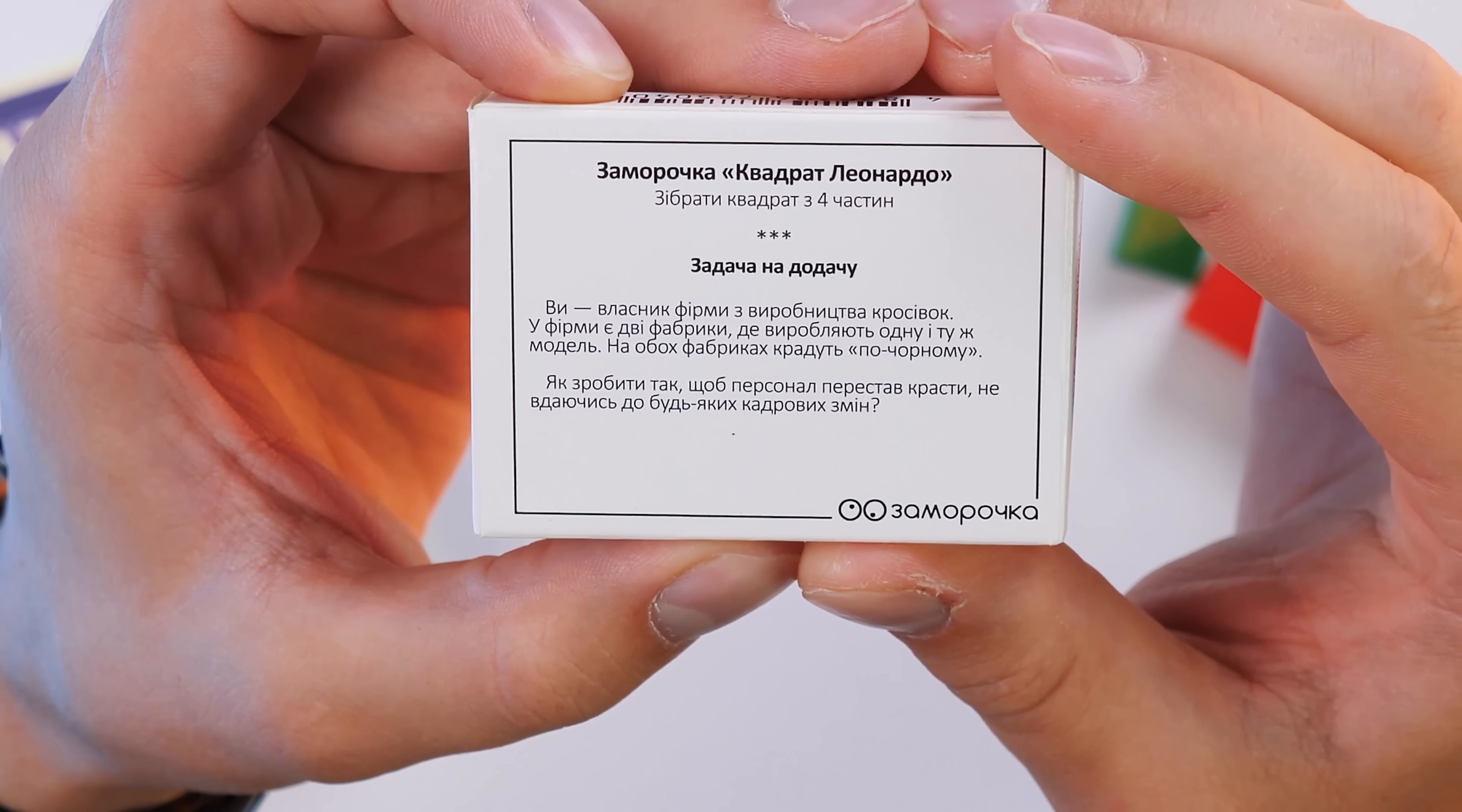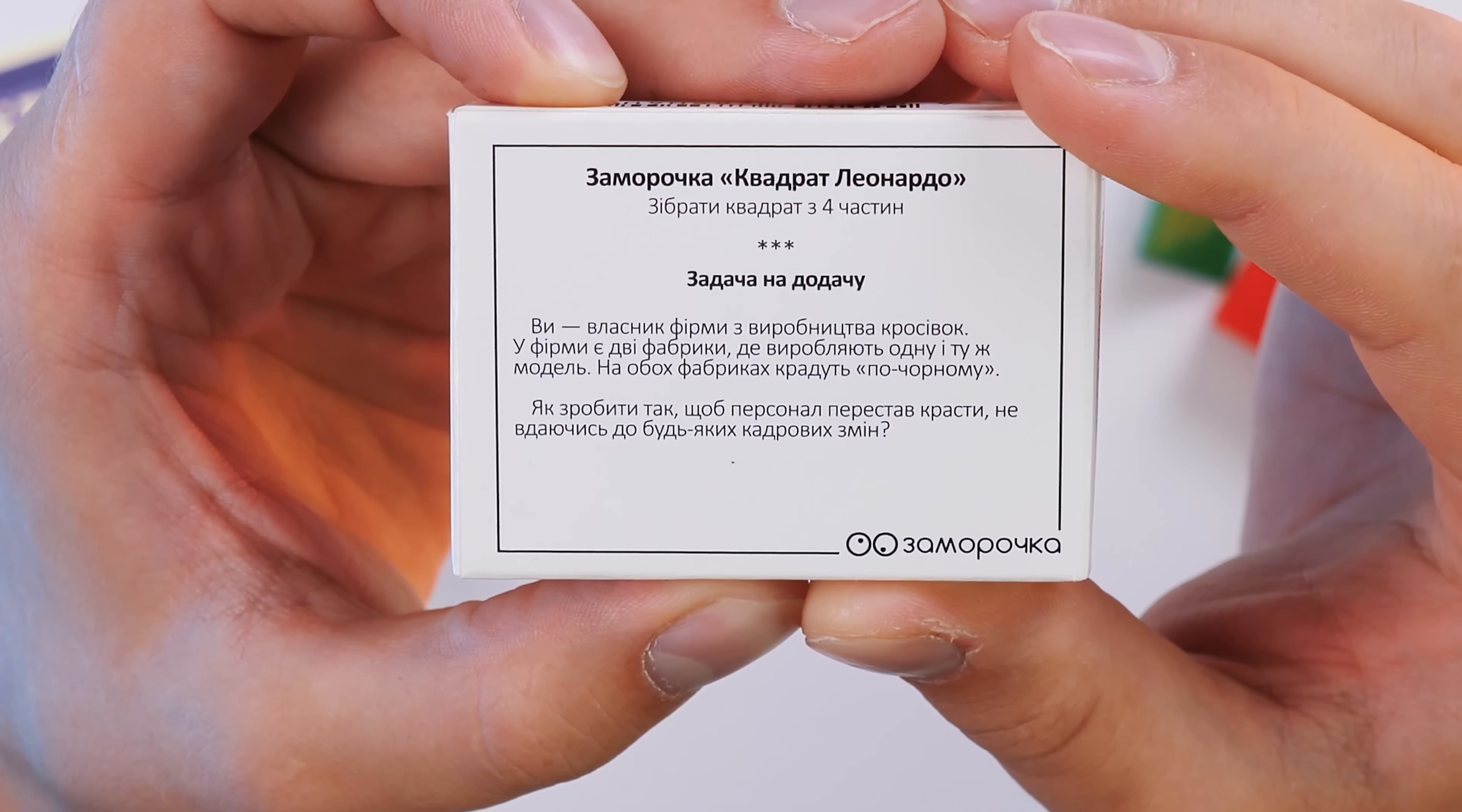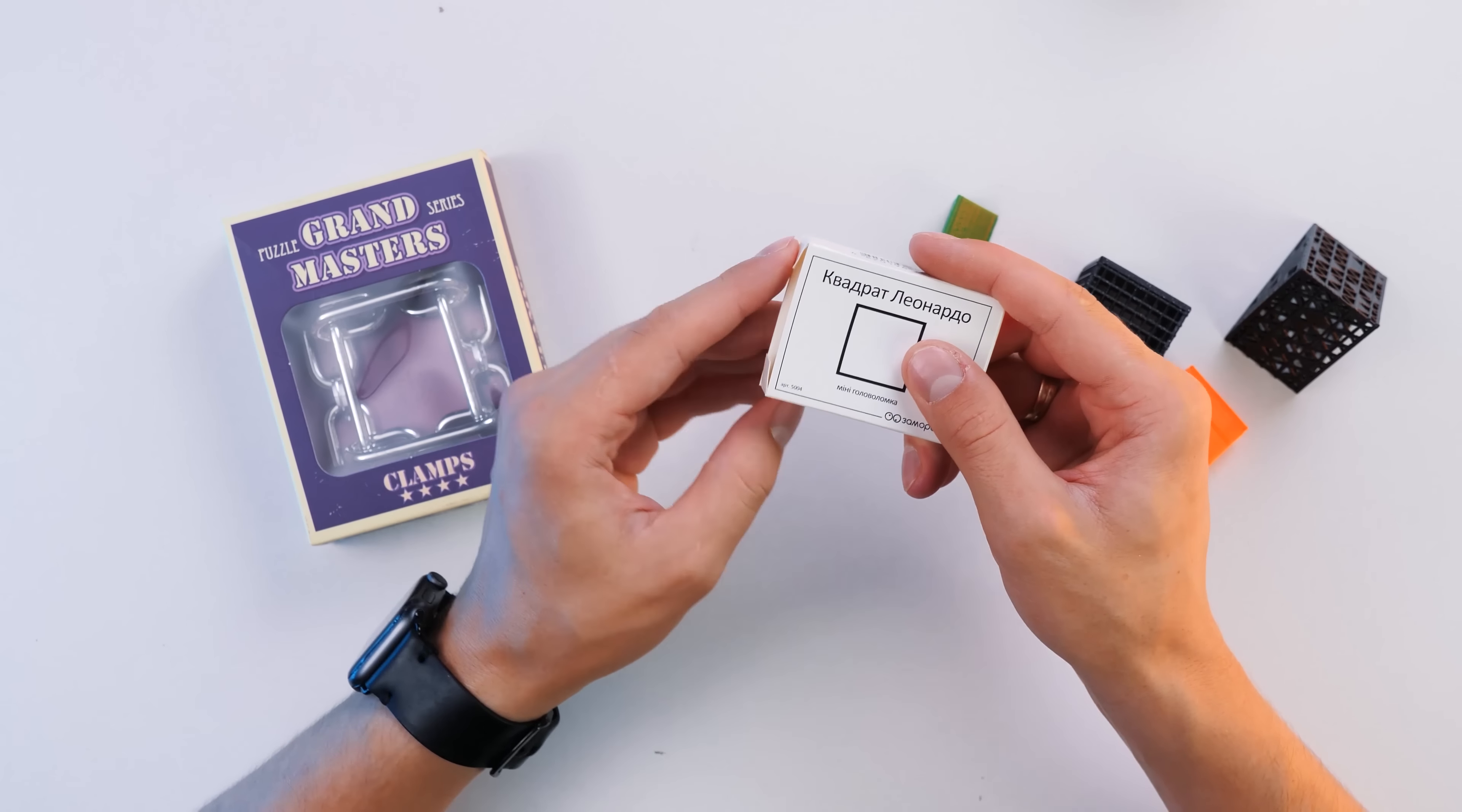So, you own a sneaker company. The company has two factories that produce the same model. Employers of both factories often steal goods. How to stop the stealings without firing employees. Write the answer to this riddle in the comments below this video. And I start unpacking a puzzle called the Leonardo square.